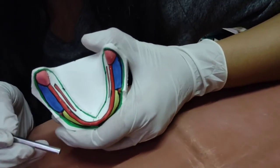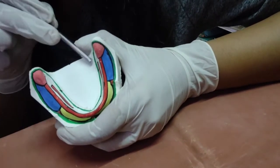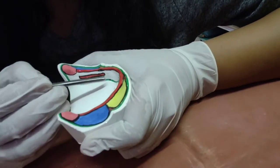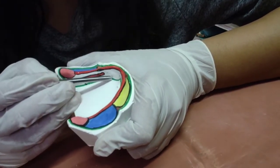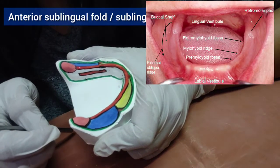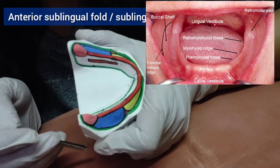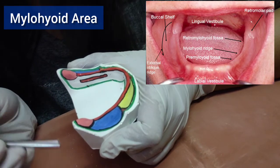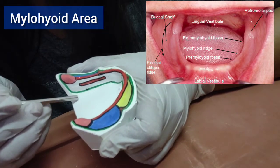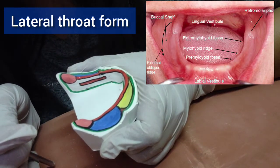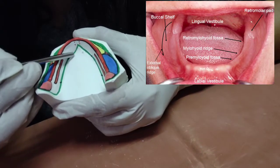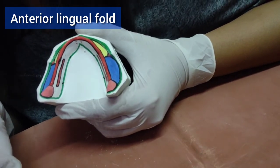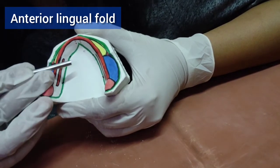The only way to achieve great retention in a mandibular denture is by properly recording the lingual vestibule, also called the alveolingual sulcus. It is divided into three parts: the anterior vestibule, called the sublingual crescent area or anterior sublingual fold; the middle area, called the mylohyoid area; and the distal lingual vestibule, called the lateral throat form or retromylohyoid fossa. The anterior lingual sulcus is influenced by the genioglossus muscle, the lingual frenum, and partly by the sublingual glands.